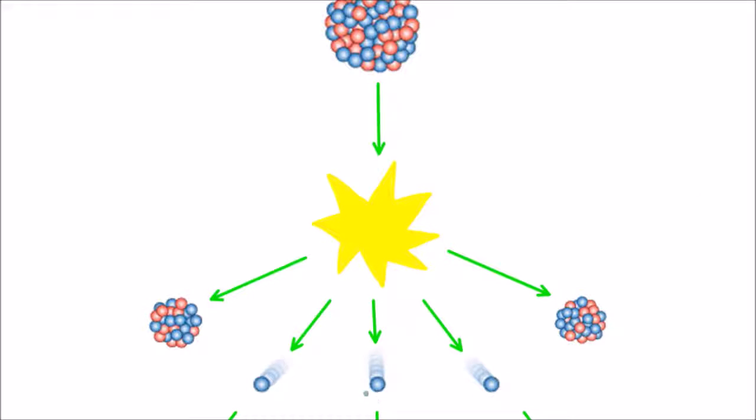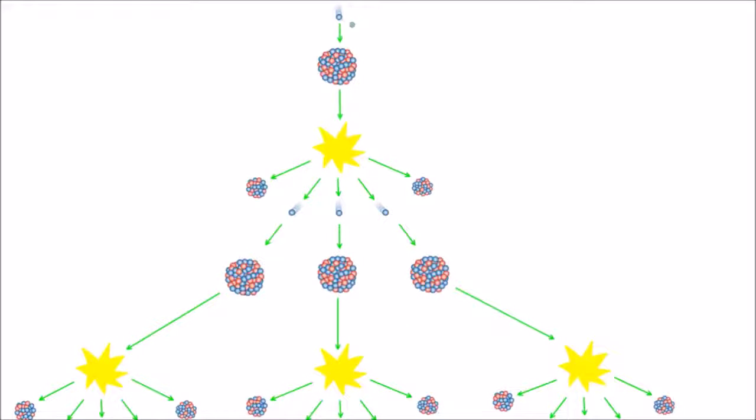These neutrons are called fission neutrons and they can then be absorbed by other nuclei and cause more fission reactions to occur. So we can see here that the initial neutron triggered a fission of this nucleus which split into two smaller nuclei and emitted these three neutrons.